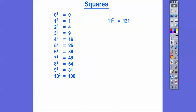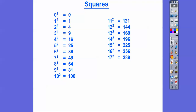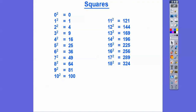Continuing: 11 squared is 121, 12 squared is 144, 13 squared is 169, 14 squared is 196, 15 squared is 225, 16 squared is 256, 17 squared is 289, 18 squared is 324, 19 squared is 361, 20 squared is 400. I'd recommend knowing as many of these as you can — at least through 15 or so. Knowing your squares just builds your math skills.